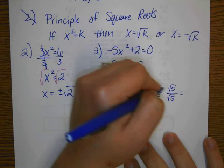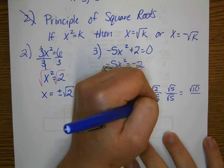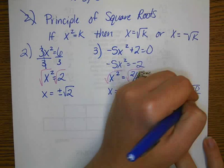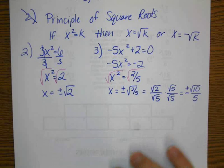And we get square root of 2 times square root of 5 is square root of 10 over square root of 5 times square root of 5 is 5. And don't forget your plus or minus out in the front.